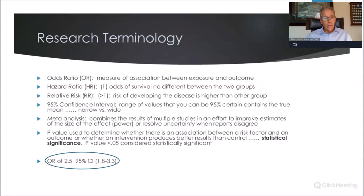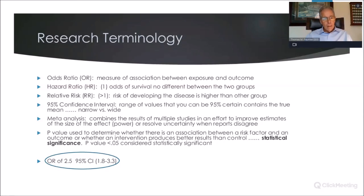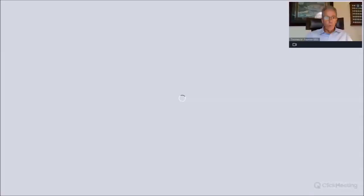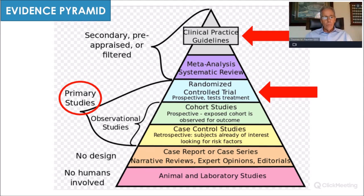A meta-analysis combines the results of multiple studies — perhaps with lower individual participant numbers — so you can see a larger effect size and ferret out heterogeneity between studies where they may agree or disagree. A p-value determines statistical significance when it's less than 0.05. As clinicians, I think we have an obligation to understand a little bit of what we read and be able to say for ourselves whether we should rely on the conclusions presented.